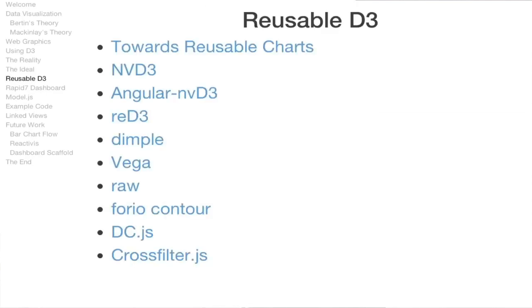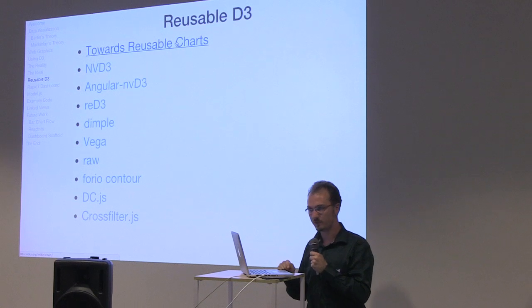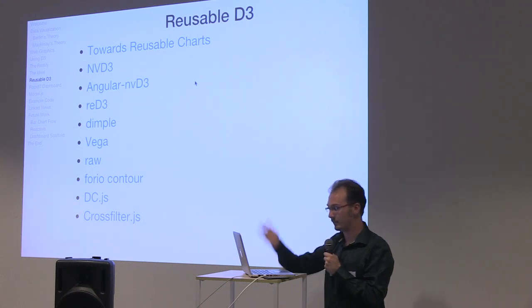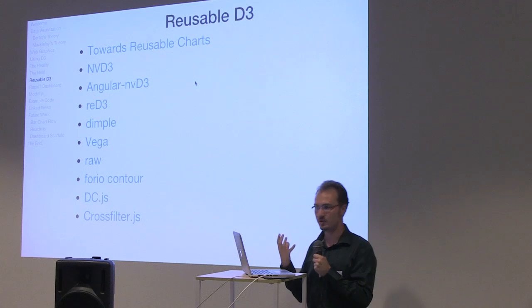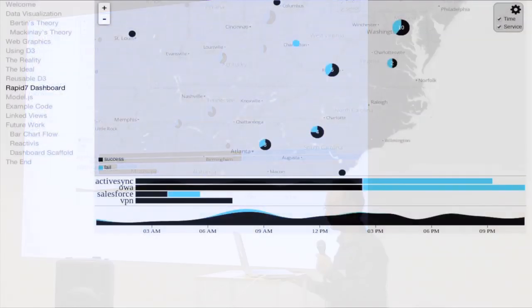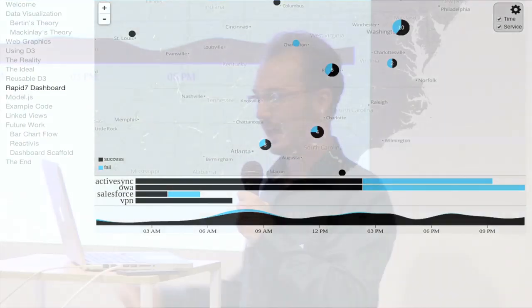Ideally you could take any dataset and match it up with any visualization technique. People have started trying to make this happen with various attempts to generalize D3 examples. One of them is the 'towards reusable charts' approach. There are lots of libraries, all with their merits, and I'm introducing a new idea to the mix.